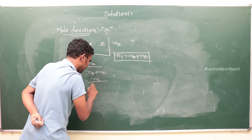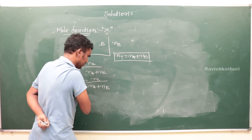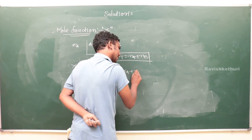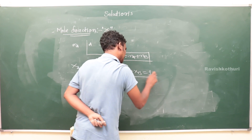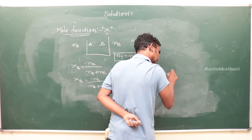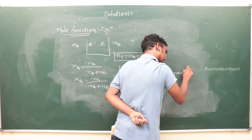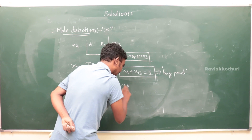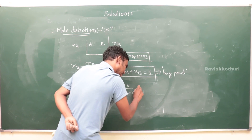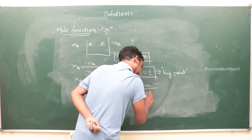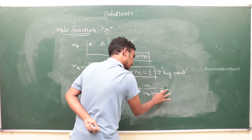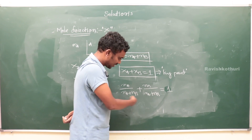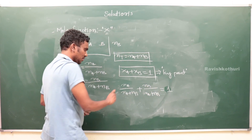Key point: x_a + x_b = 1. This can be verified by adding nₐ/(nₐ+n_b) + n_b/(nₐ+n_b) = 1, by taking the LCM. This is a very important result.